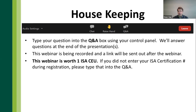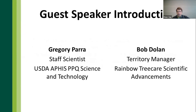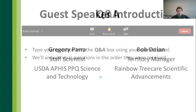This webinar is being recorded and a link will be sent out afterwards in case you missed something or want to share it with a colleague. This webinar is worth one ISA Arborist CEU. If you didn't enter your ISA certification number during registration, please type it into the question and answer box now. I'm pleased to introduce Greg Parr from USDA APHIS and Bob Dolan, RTSA's tri-state territory manager.